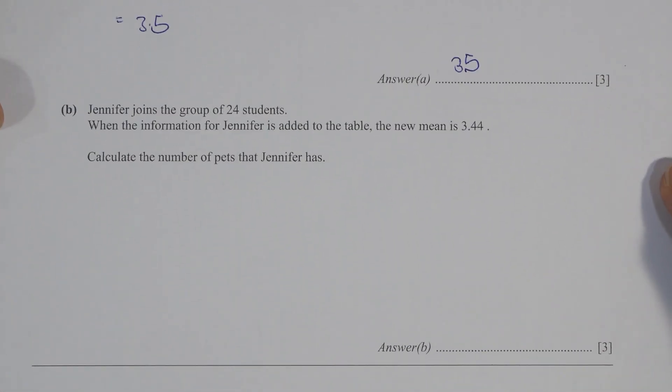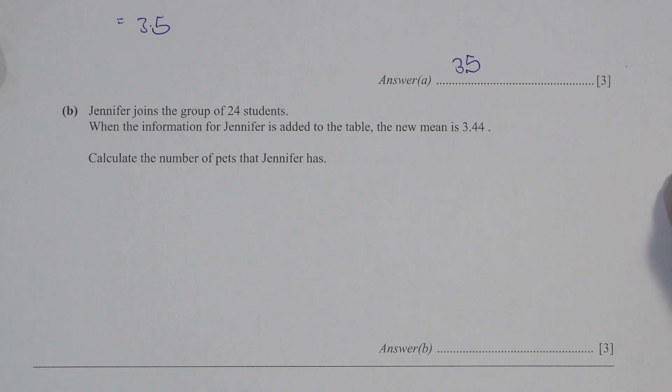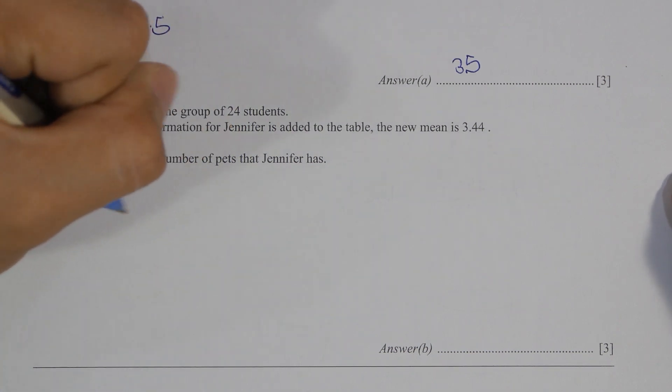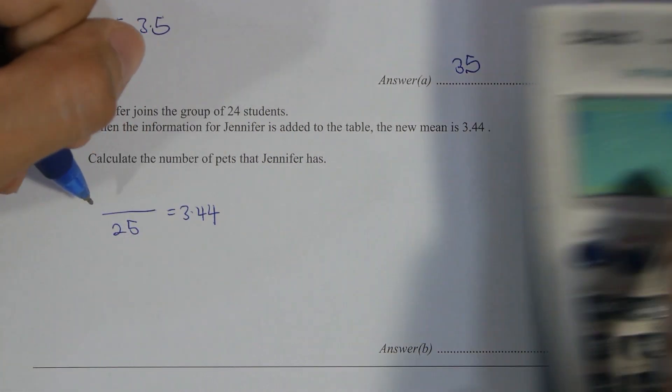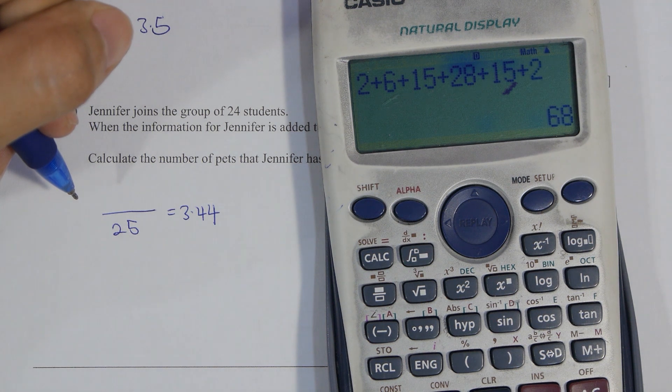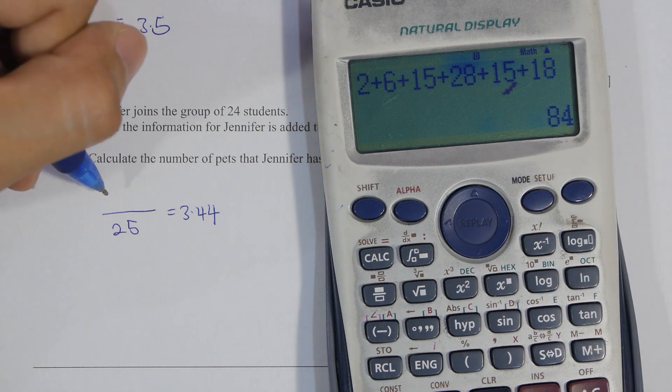For part B, Jennifer joined, so the new mean is now 3.44. So 54 plus unknown over 25, and the total students increase into 25. So after you run the calculation, you will get the unknown as 2.